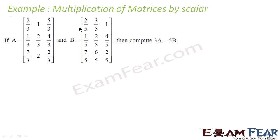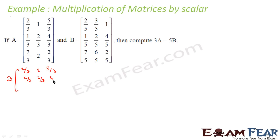Let's take an example. We have matrix A and matrix B, and we have to compute 3A minus 5B. What is 3A? We multiply 3 into each element of matrix A. For instance, 2/3 becomes 2, 5/3 becomes 5, 1/3 becomes 1, 2/3 becomes 2, 4/3 becomes 4, 7/3 becomes 7, and 2/3 becomes 2 — multiplying each element by 3.